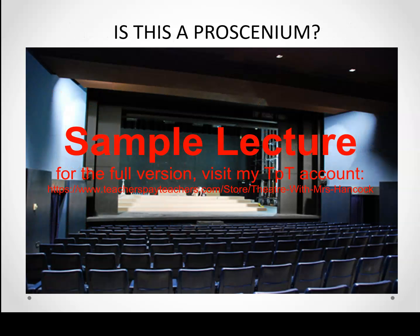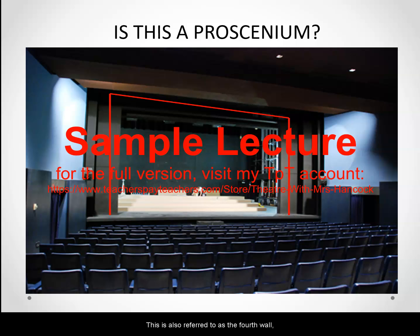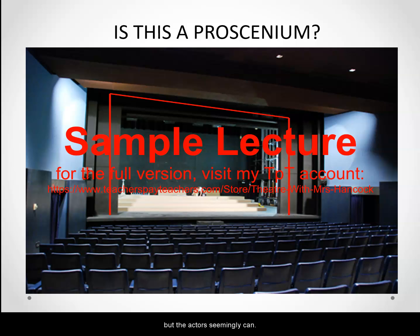Is this a proscenium? We can see here highlighted in red that there is a proscenium arch. Additionally, the audience is in rows facing the stage and separated from the bulk of the action. This is also referred to as the fourth wall — an imaginary wall that the audience can see through but the actors seemingly can't.